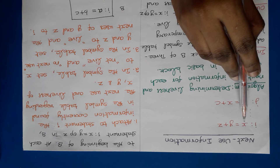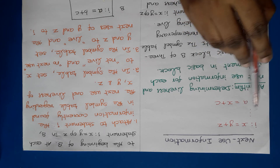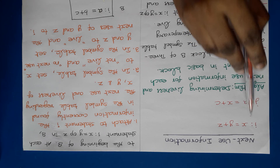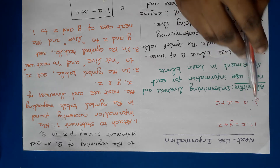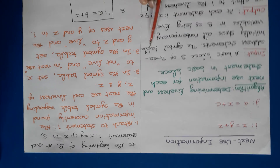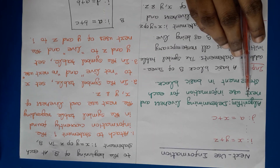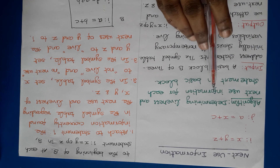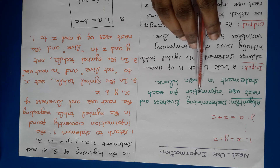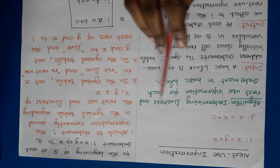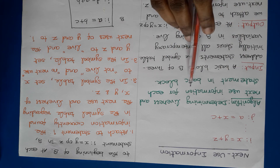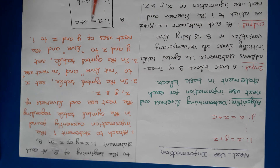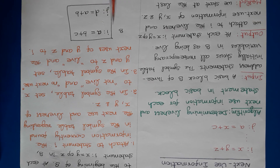However, x should not be changed between i and j. This algorithm is used for determining liveness and next use information for each statement in a basic block.